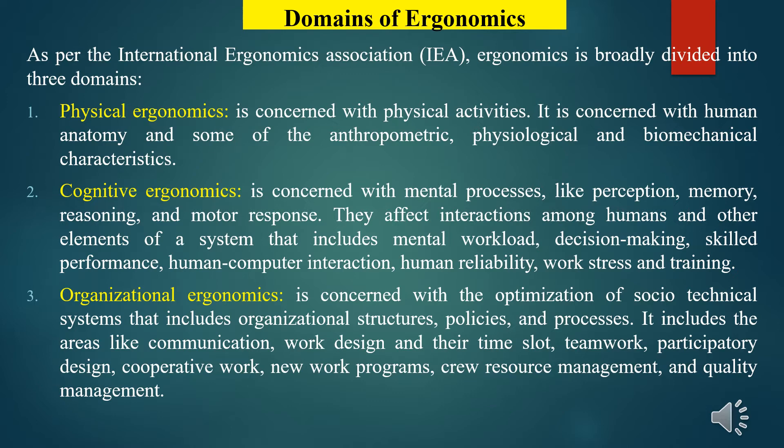Physical ergonomics is concerned with physical activities, human anatomy and some of the anthropometric, physiological and biomechanical characteristics. In the case of cognitive ergonomics, it is concerned with mental processes like perception, memory, reasoning and motor response. These affect interaction among humans and other elements of a system, and include mental workload, decision making, skilled performance, human-computer interaction, human reliability, work stress and training.